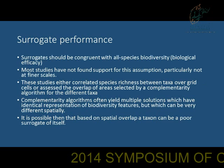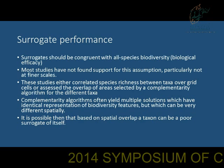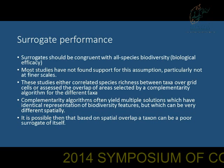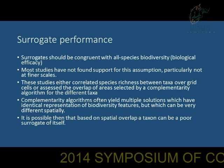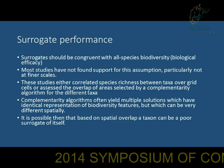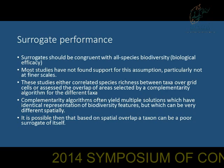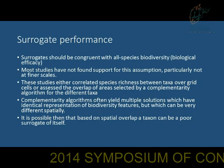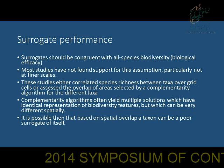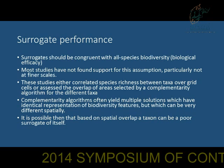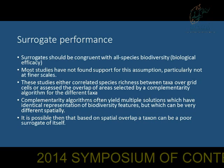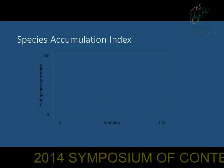Surrogate performance should be congruent with all your biodiversity. Most studies have found no support for this assumption, particularly not at finer scales. These studies either correlate species richness between taxa over grid cells, or assess overlap of areas selected by a complementarity algorithm for different taxa. What can happen with these algorithms is that they look at the overlap of areas selected and you can end up with a taxon being a bad surrogate of itself. Most of these studies concluded that surrogacy is not really good. But then Faith came up with what's called the species accumulation index.